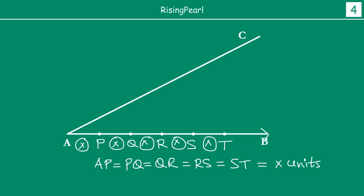Now let's draw a line AC — the angle doesn't matter, just draw a random line AC. Then at point T, draw any line that intersects line AC. The angle doesn't matter. Let's name the point where this line intersects AC as point D.